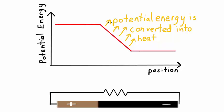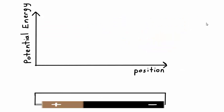So there's another example of what happens to the potential energy as charges move through a circuit. A very confusing but interesting question would be: what if I connected the positive and negative terminals of a battery together? I've got a diagram of that here. On the left hand side I've got my positive terminal, hooked up with a wire, going all the way to my negative terminal.